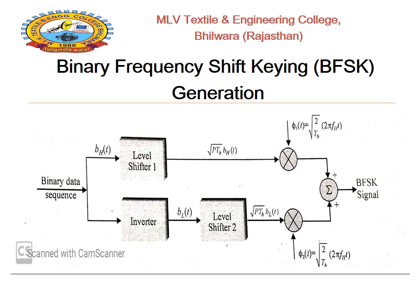The multiplier multiplies two terms: under root P·TB·BH(t) and φ₁(t), where φ₁(t) = under root (2/TB) · cos(2π·FH·t). φ₁(t) is the higher frequency component that is multiplied by the input bit sequence term under root P·TB·BH(t). This constitutes the upper section of the BFSK generator. The lower section consists of an inverter, a level shifter, and a product modulator.